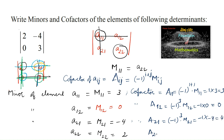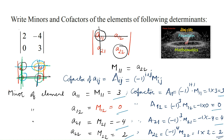And cofactor A22 is equal to (-1)^(2+2), that is (-1)^4 = 1, into M22 which is 2. So 1 into 2 is 2. Therefore, the minor elements are 3, 0, -4, and 2, and the cofactor elements are 3, 0, 4, and 2.